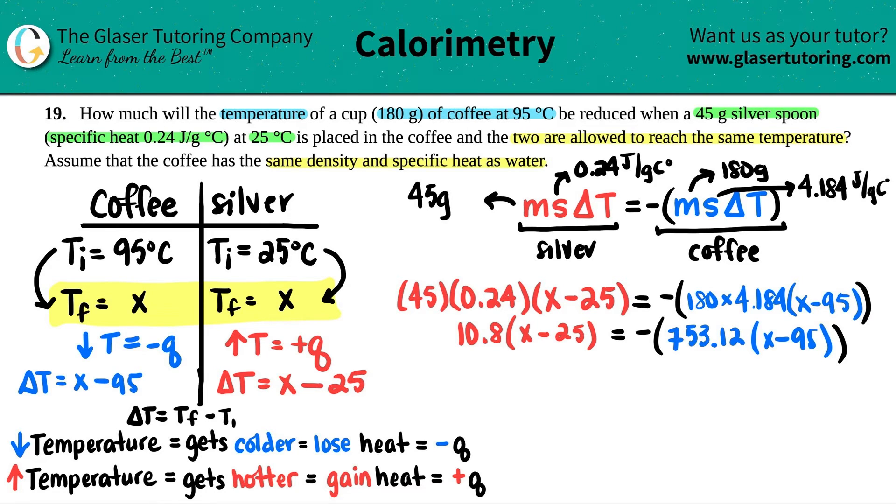Now this just comes down to algebra. So the first thing I would do is I would multiply these two numbers, and these two numbers. So 45 times 0.24, I get 10.8. And that's now being multiplied by x minus 25. And this all equals the negative, 180 times 4.184. I get 753.12 times x minus 95. Now here comes our lovely distributing. This has to be distributed into the x and the negative 25. Same thing on this side. So we'll do this all in one shot.